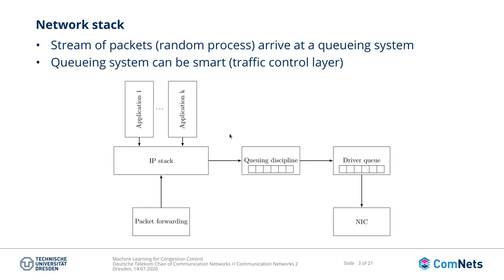What we see here is a network stack, as it could be located inside the source node. Here we see the applications that are running in the source that generate the traffic. Down here we see the network interface card that is attached to the link we have seen earlier. This is a network device that pushes the packets into the channel. The speed of this network device is limited by the channel it is attached to, so it is limited by the link capacity. Now we ask the question: what happens if the applications generate traffic at a faster rate than the network interface card can actually handle?